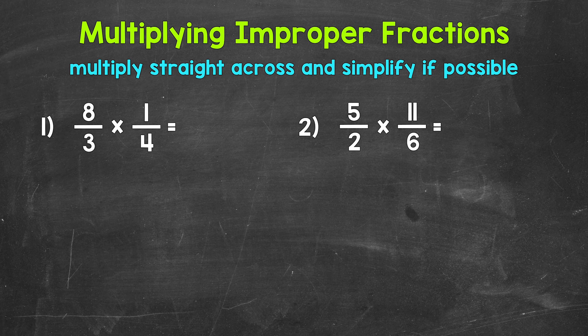Let's multiply straight across, starting with the numerators. We have 8 times 1, so straight across here. 8 times 1 is 8.